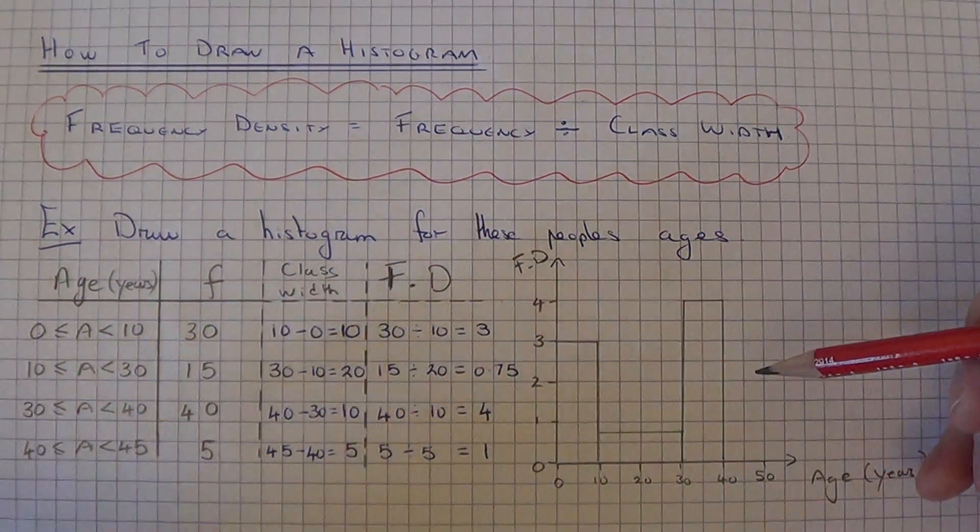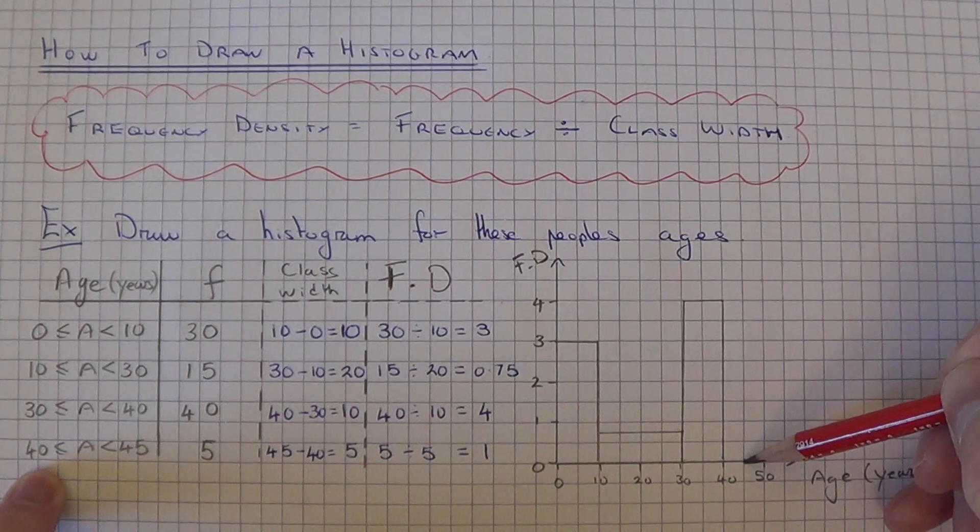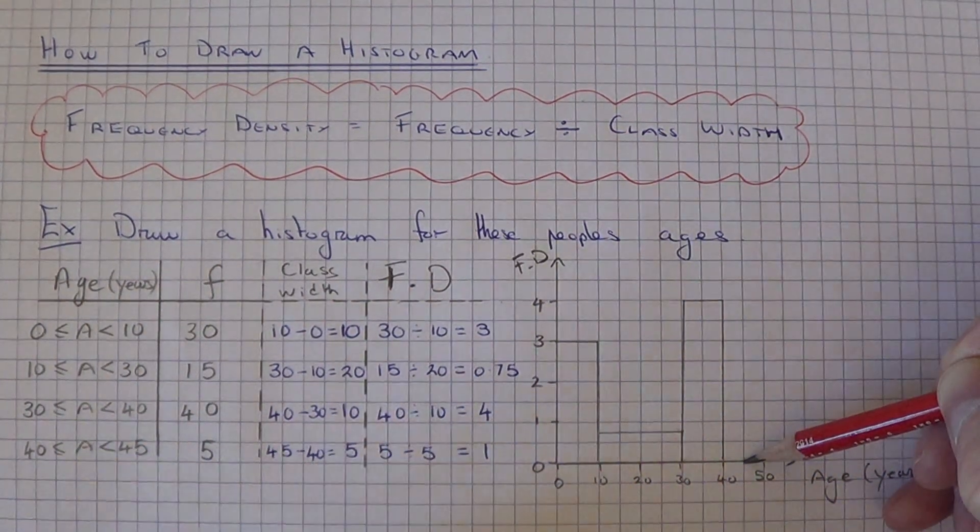And for the final group, which went from 40 to 45, the frequency density was 1.